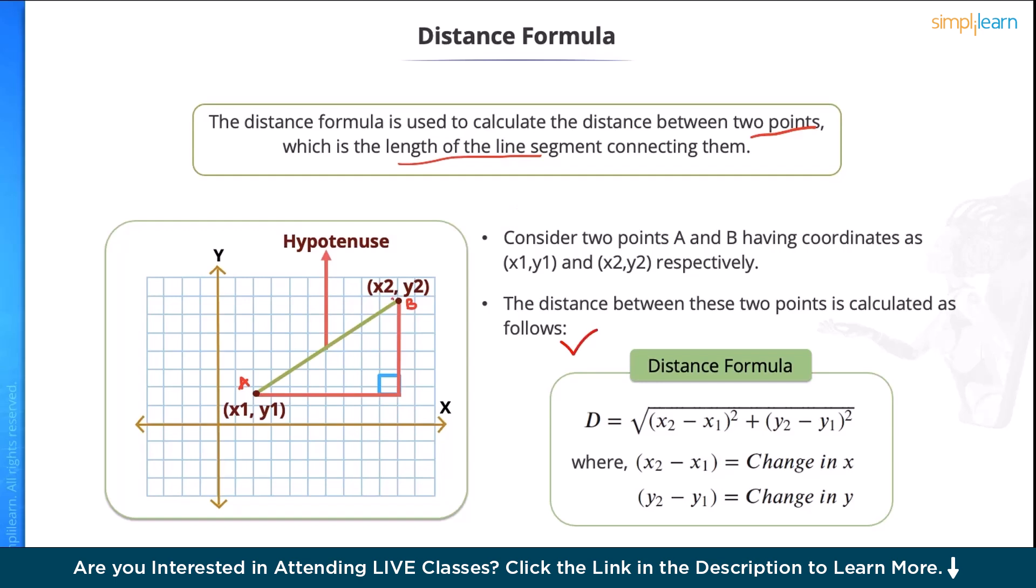we can use the formula as D = square root of (x2 - x1)² + (y2 - y1)², where (x2 - x1) is the change in x, or you can say the base of this right angle triangle, and (y2 - y1) is the change in y or the perpendicular distance of this right angle triangle.